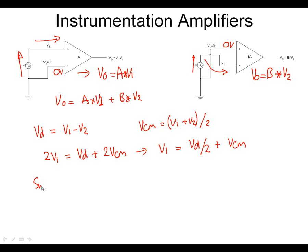We can do exactly the same kind of work. So similarly, we can say that V2 is equal to minus VD upon 2, plus VCM. So we've effectively got two equations. We've got V1 in terms of differential and common, and we've got V2 in terms of differential and common.